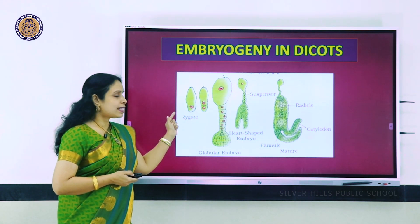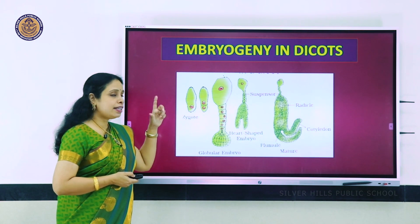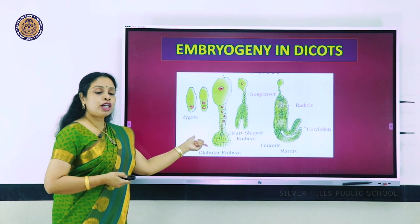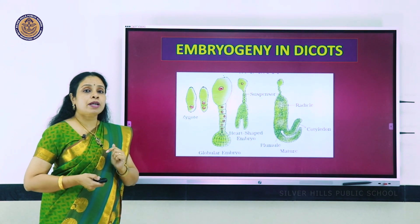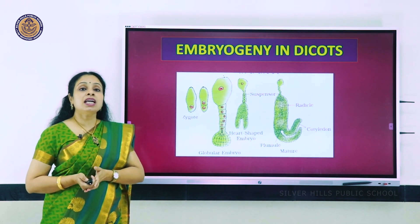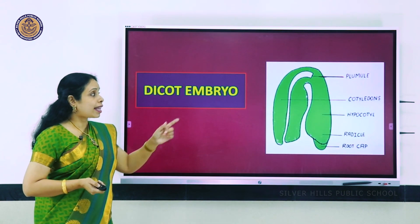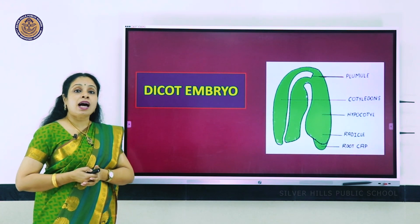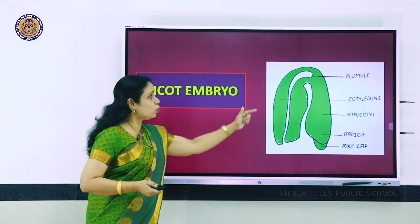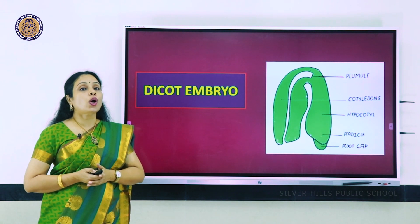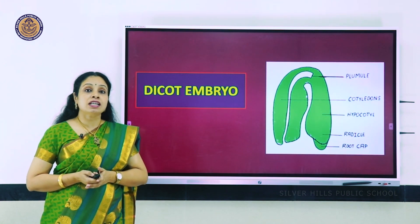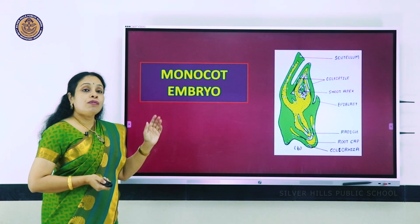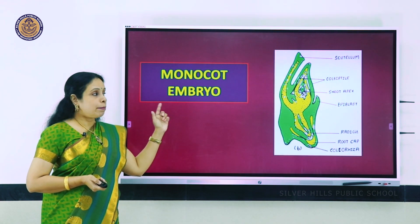From the diploid zygote, it will divide into many cells. Initially it forms a globular embryo, then a heart-shaped embryo, and then the embryo proper. One part becomes the baby plant, and the two leaf-like structures are the cotyledons, which provide reserve food material. This is the dicot embryo; you can also see the monocot embryo structure.